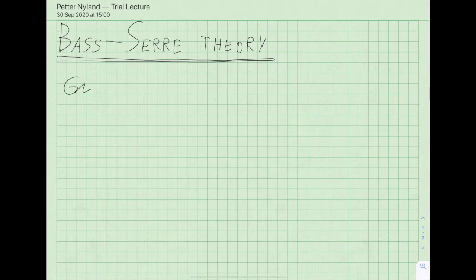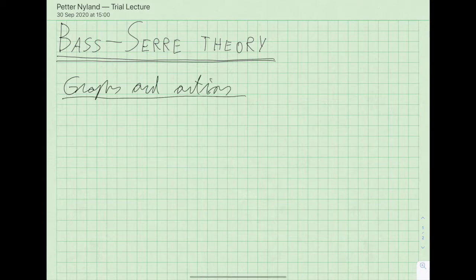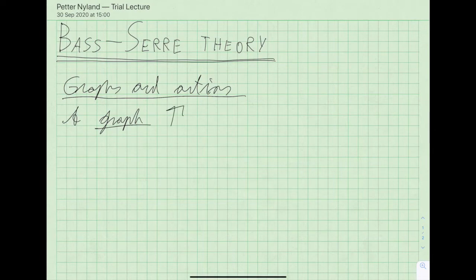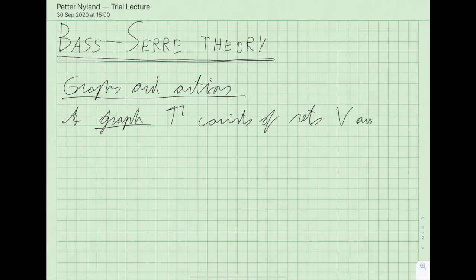Let's begin discussing graphs and actions — group actions on graphs. Trees, of course, are special kinds of graphs. A graph, which we'll denote gamma, consists of sets V and E, where V is the set of vertices and E is the set of edges.